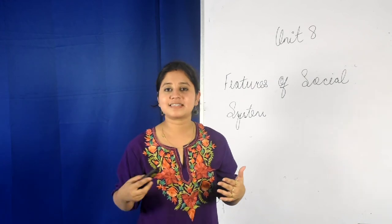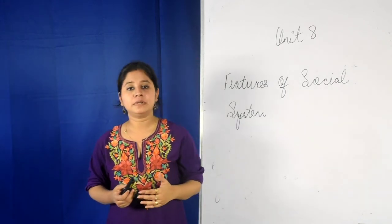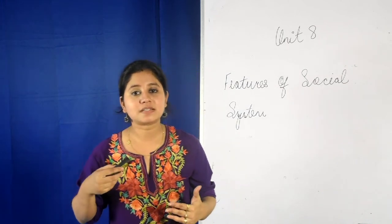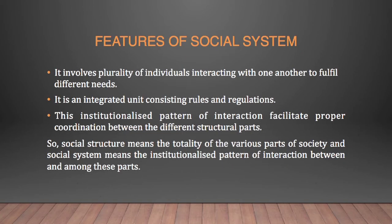Now let us understand the features of a social system. The first feature is that it involves a plurality of individuals interacting with one another at the same time to fulfill each other's needs. The second feature is that it is an integrated unit guided by different rules and regulations. For example, in India, while interacting with an elderly person, we are expected to interact differently, even if that person holds a lower-ranking job.